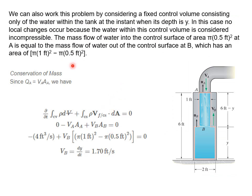There's another way to work this problem — by considering a fixed control volume and only looking at the water in the tank at the instant when the depth is Y. In this case there are no local changes because it's fixed and the source term is zero. You have flow coming in: V_A times A_A, and flow rising up at the surface: V_B times A_B. Plugging those values in, you again get 1.70 feet per second.